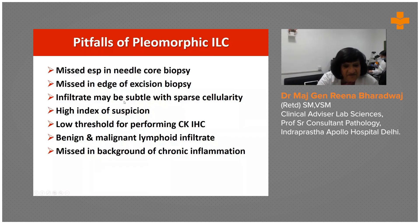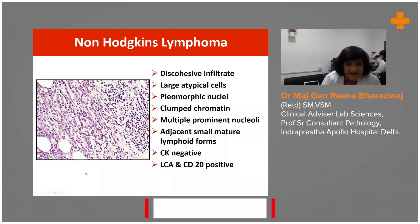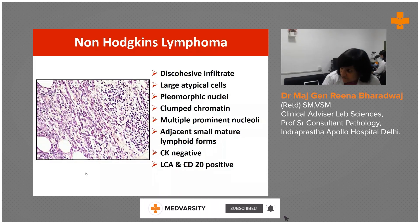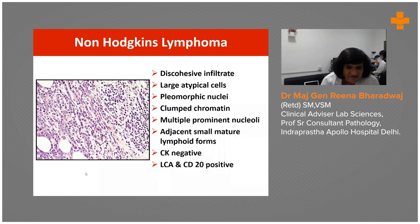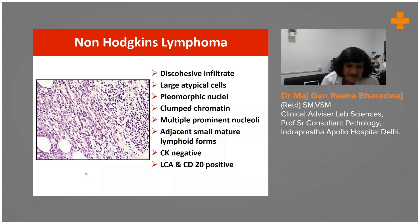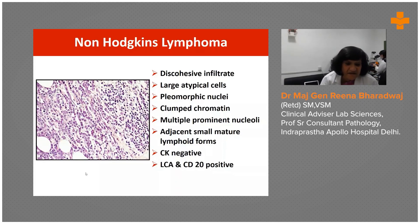The infiltrate may be very subtle with sparse cellularity. Maintain a high index of suspicion and perform immunohistochemistry if in doubt. An important differential is non-Hodgkin's lymphoma, which is also discohesive and shows large atypical cells with pleomorphic nuclei, clump chromatin, and prominent nucleoli. However, lymphoma will be CD20 and LCA positive and CK negative, and its incidence is much lower than lobular carcinoma.